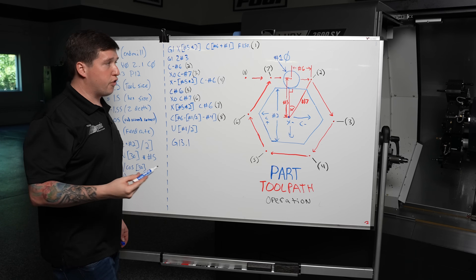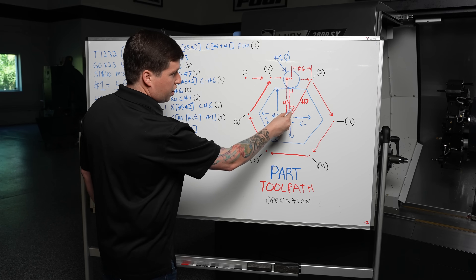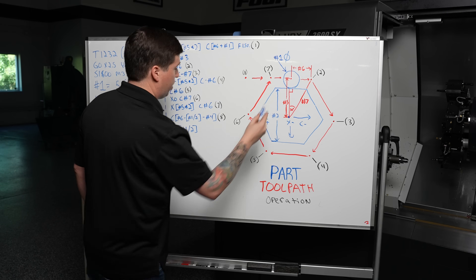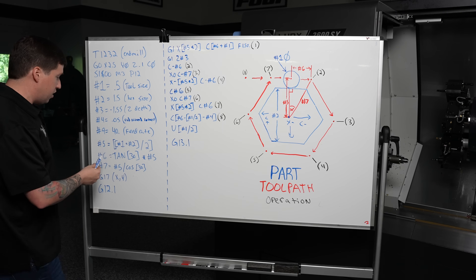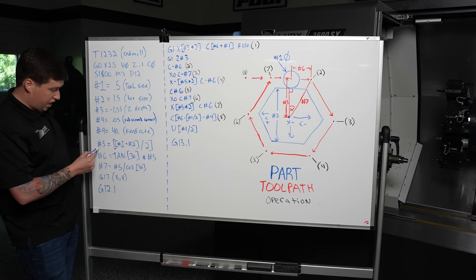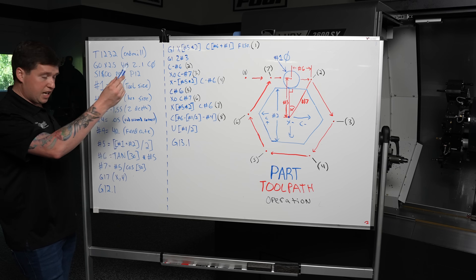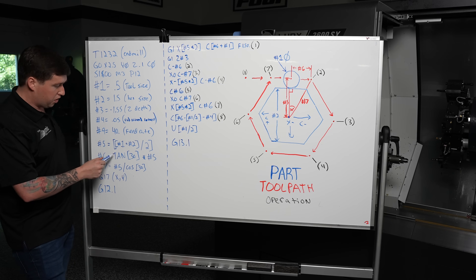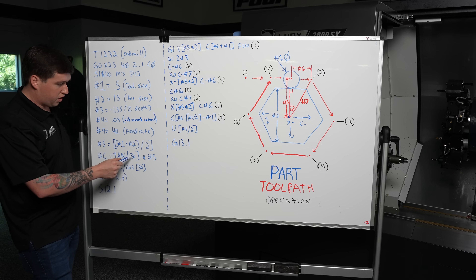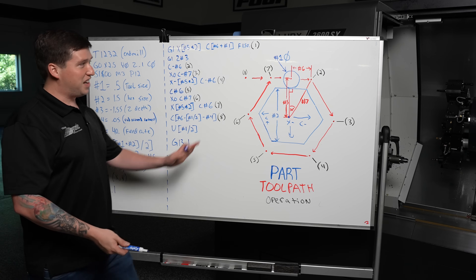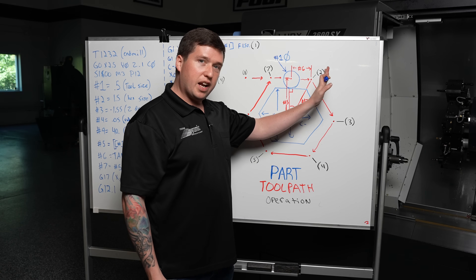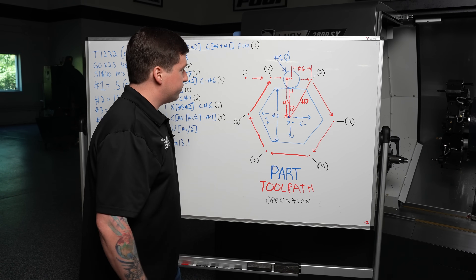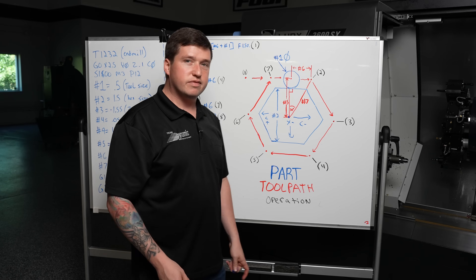What are we doing next? We found pound five — this distance right here. Now if we use the tangent of 30 degrees, which this angle right here is 30 degrees, we can get this next point. Pound six equals the tangent of 30 degrees times pound five. That is going to get us to the corner point right here. It's magical.